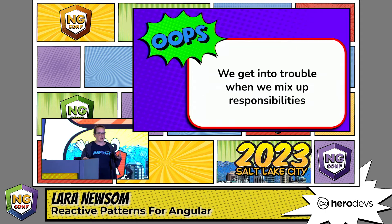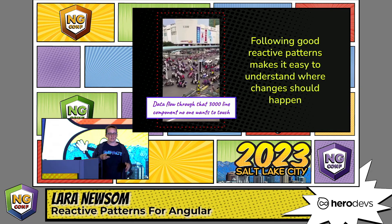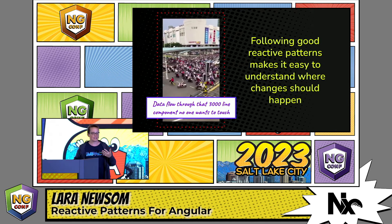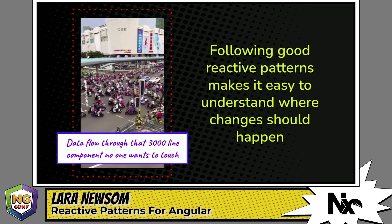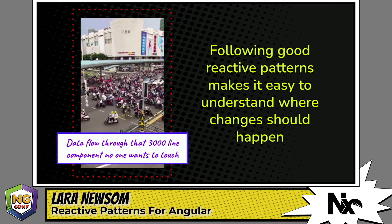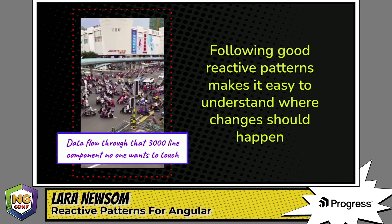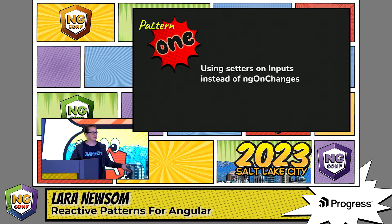We get into trouble when we start to mix up responsibilities. If we follow good reactive patterns, it's fairly easy to figure out what's going on in our application. But we've all run into a component that makes us feel like 'somehow it works, but I don't want to touch it, I don't want to try to untangle it.' We've got some patterns we can use to start to untangle that.